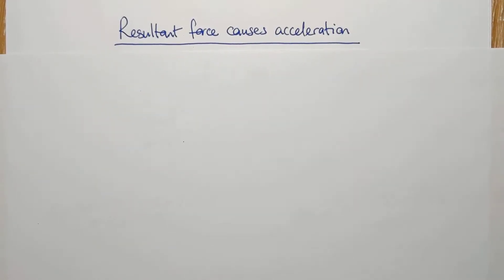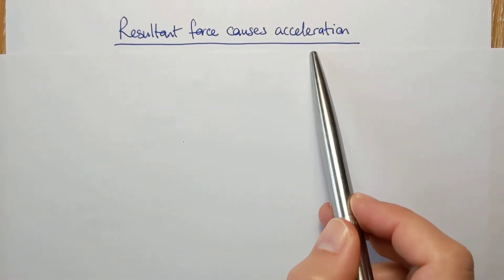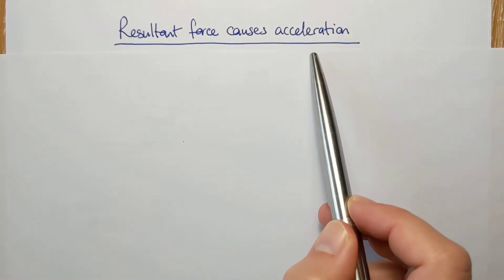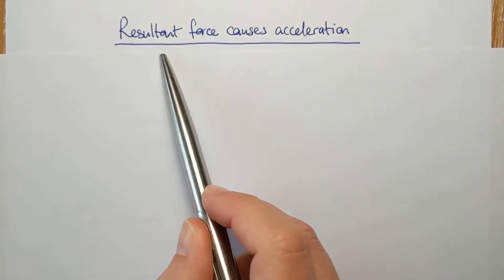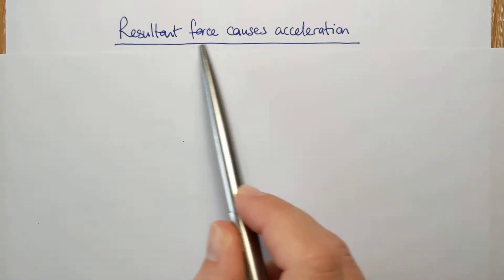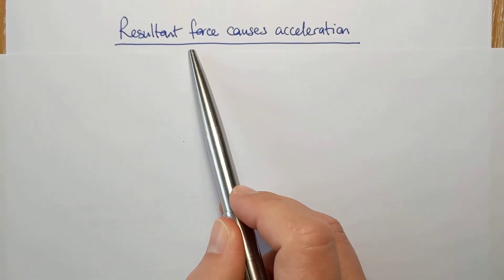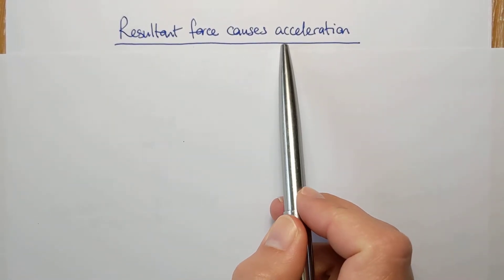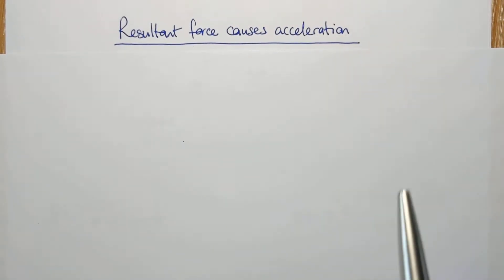We're starting out with the familiar connection between resultant force and acceleration. Just to make it absolutely rock solid clear, if you are accelerating, there is a resultant force on you. The only way you can be accelerating is if there is a resultant force on you, and they're in the same direction. So a resultant force upwards means I'm accelerating upwards, resultant force forwards means I'm accelerating forwards, and so on.